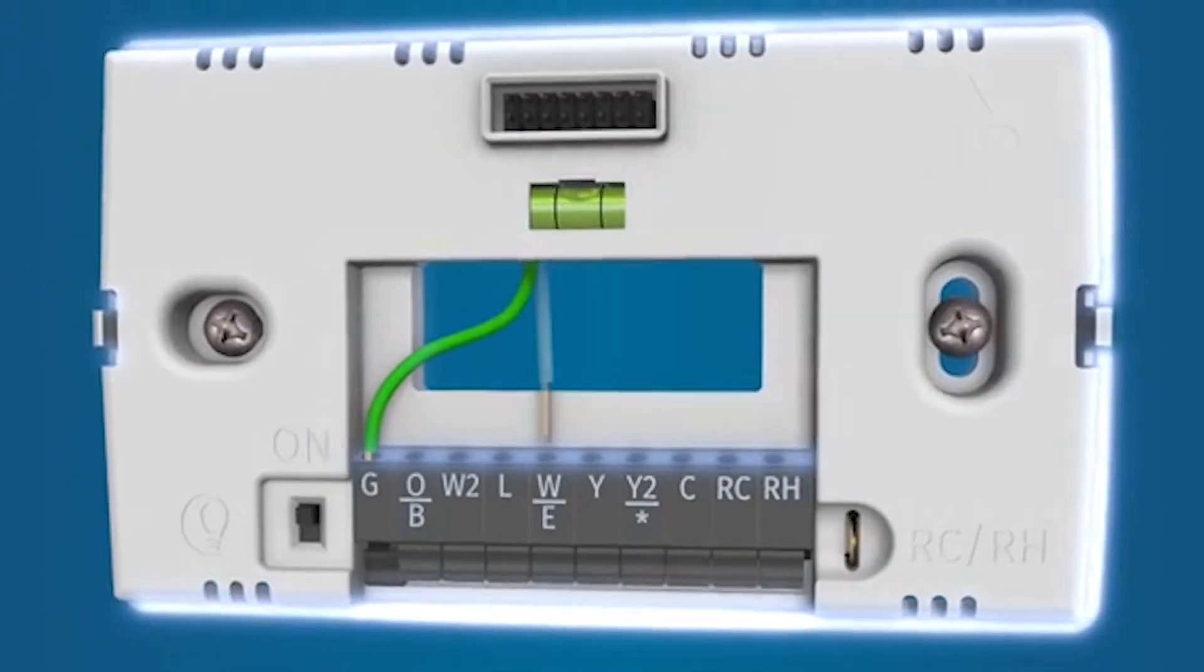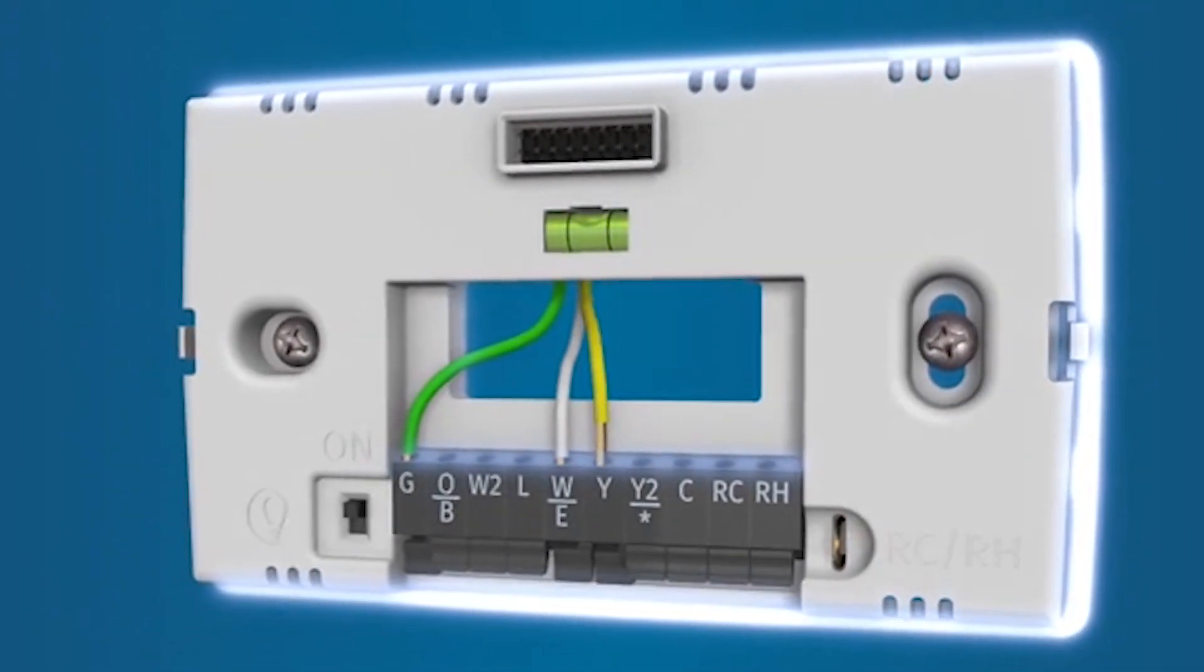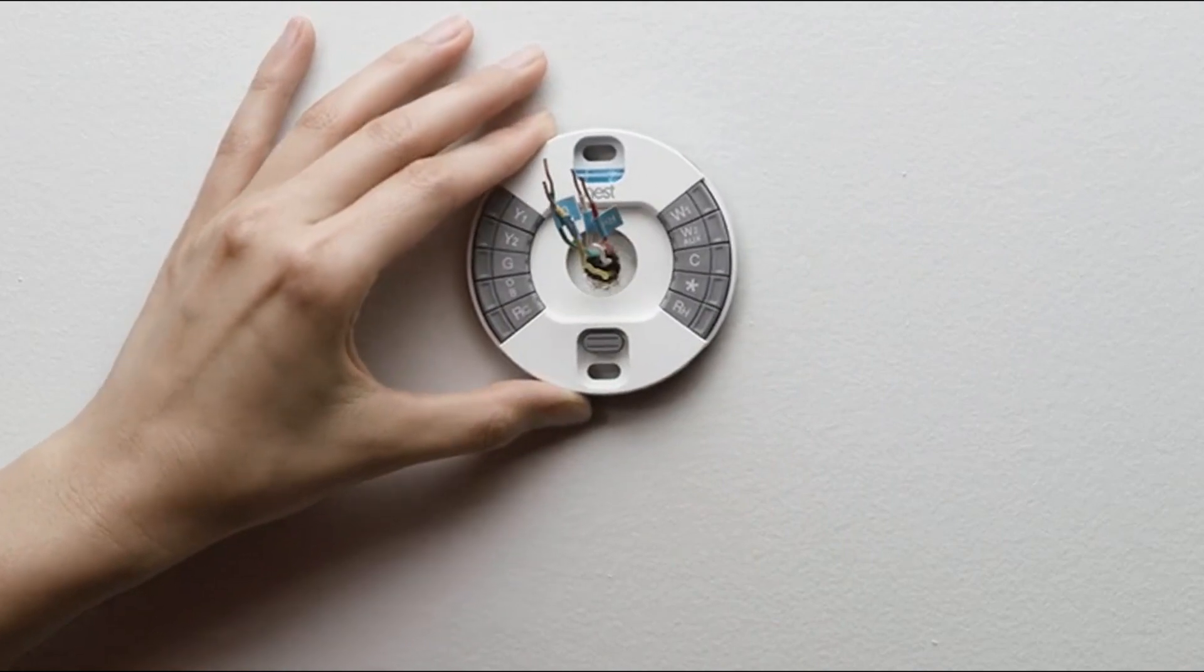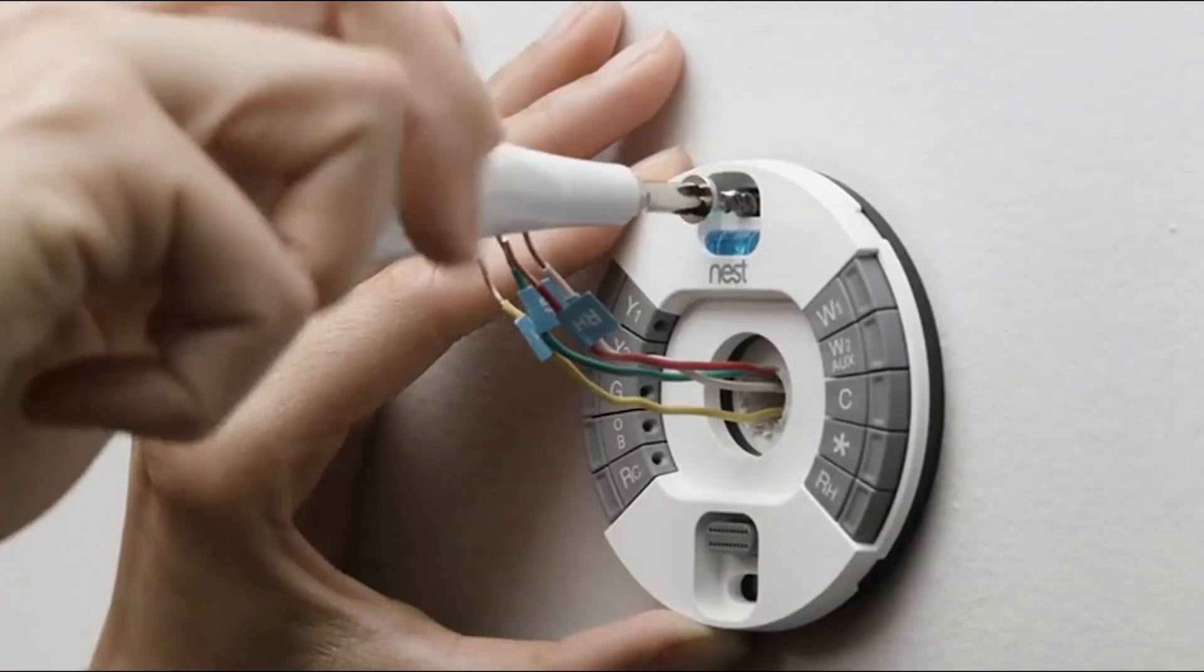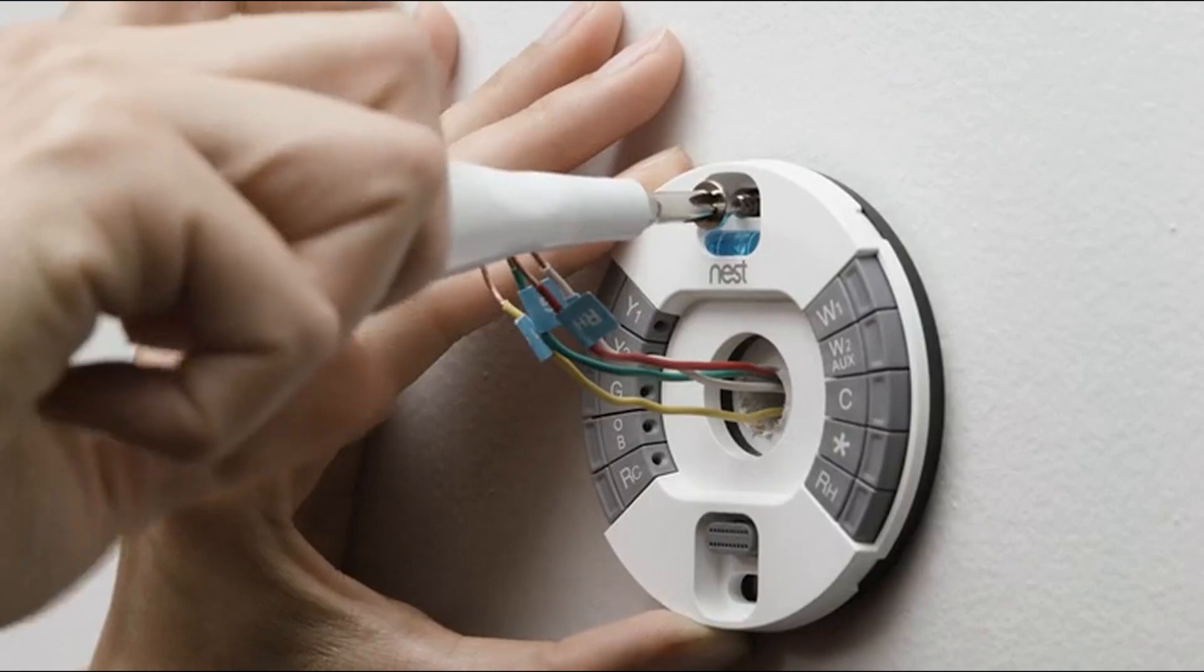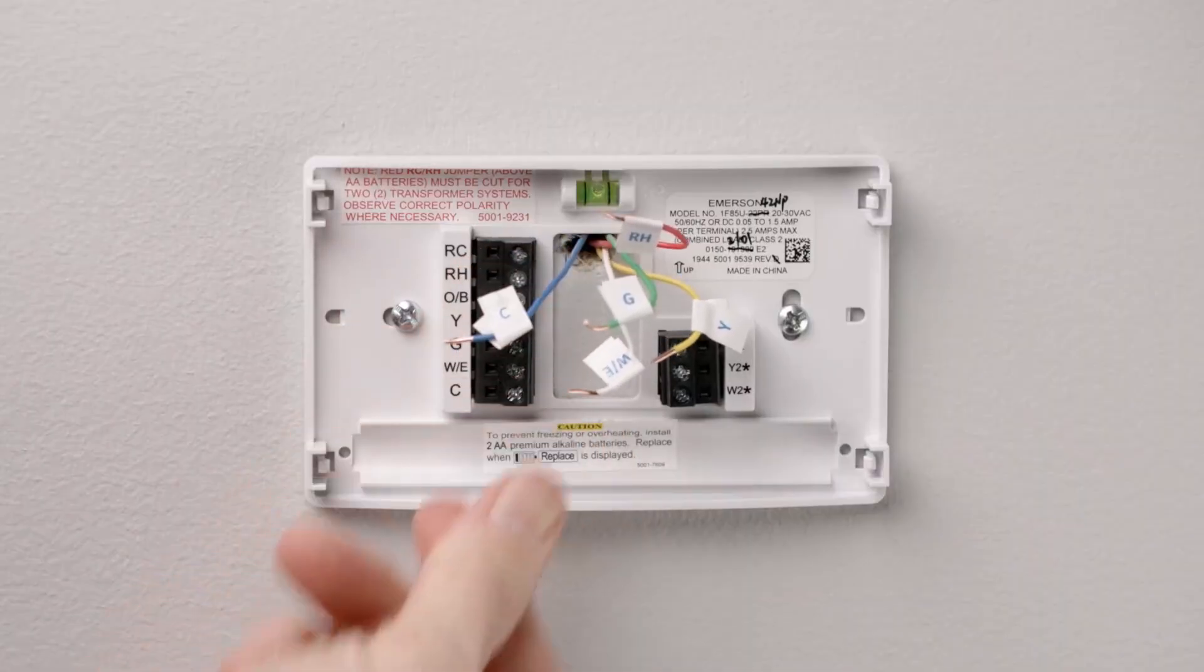Examine the wiring configuration of your thermostat. The labels on the existing wires, often marked as R, Y, W, etc., should match the wiring requirements of the new thermostat. Incorrect wiring can cause system malfunction.